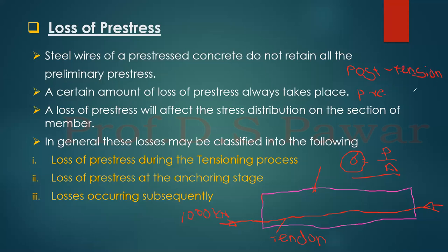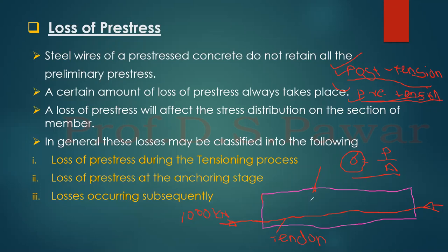In post-tensioning, when the concrete is laid, after that the steel bars are stressed. In pre-tensioning, before laying the concrete, the bars are stressed. That is the correct answer — very good. So post-tensioning means after putting the concrete you stress the tendon, and pre-tensioning means before pouring the concrete we stress the tendons and then pour the concrete.